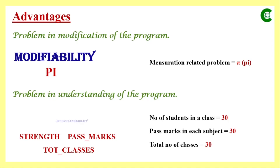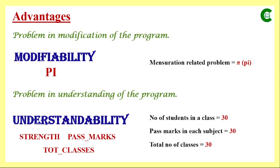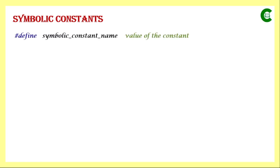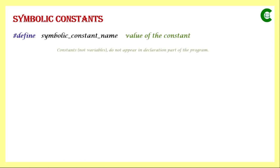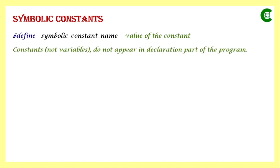So symbolic constants actually increase the understandability of the program. Those are the advantages of using symbolic constants. Now we will see how we declare a symbolic constant and how we assign the value. The syntax uses the preprocessor directive #define, followed by at least one space, then the symbolic constant name, then at least one space, and then the value of the constant.